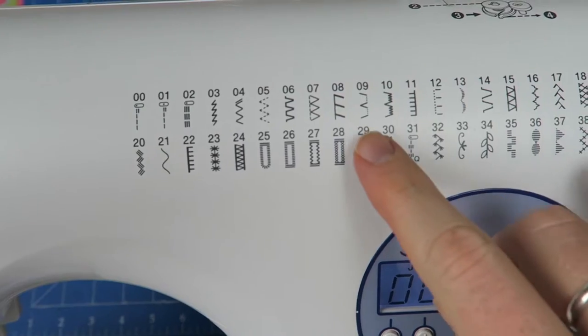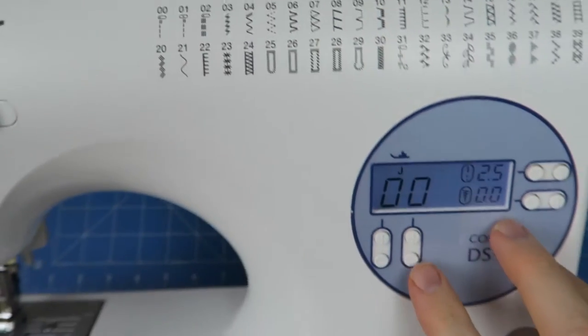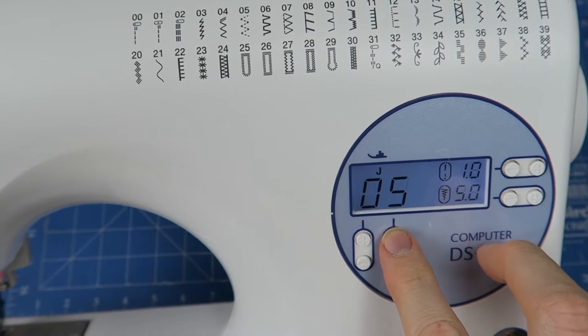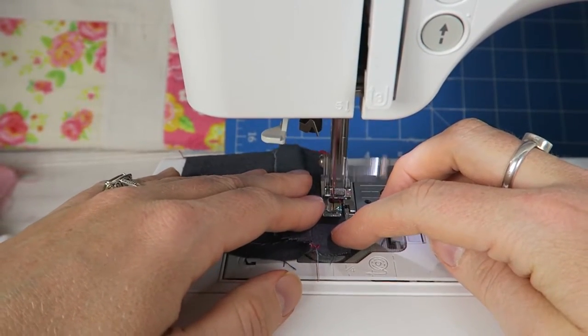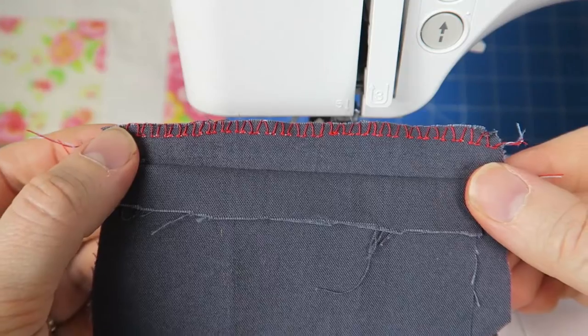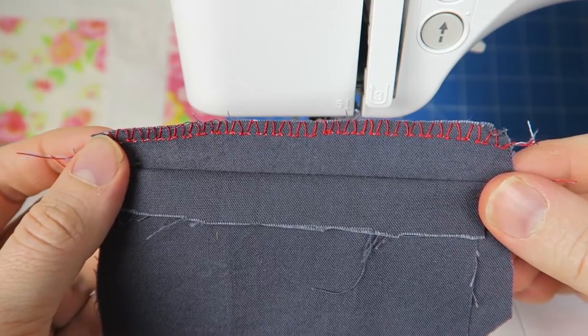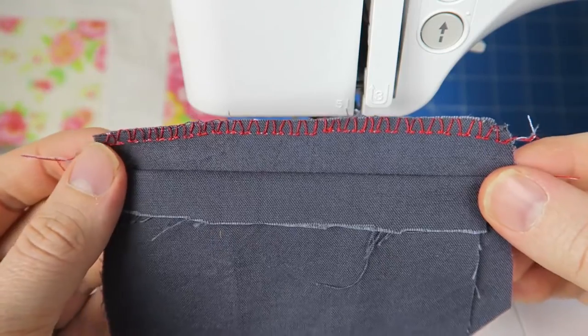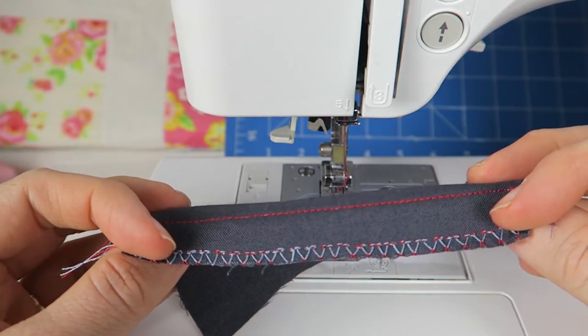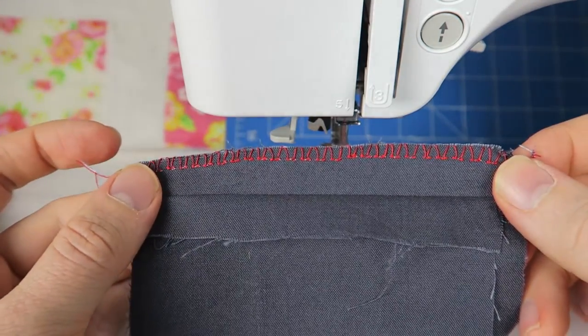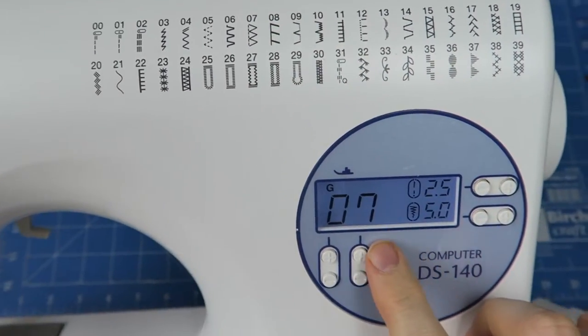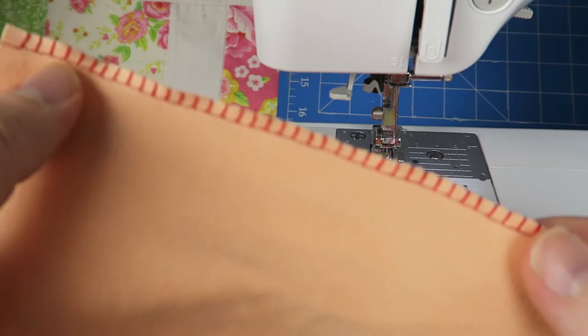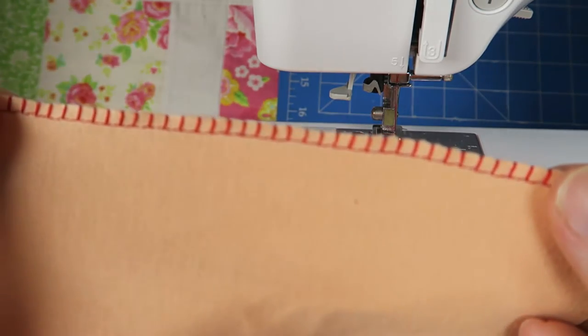There's going to be a more detailed video about how to overcast without a serger or an overlocker. Now I'm sewing the medium or heavyweight stitch, which looks really lovely, almost like a serger or overlocker. Of course you would do it in a matching thread, not like I'm doing here with a contrasting thread. And last but not least, we have the stretch overcasting stitch.